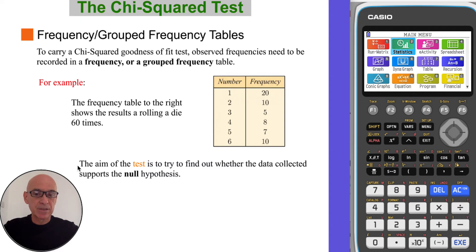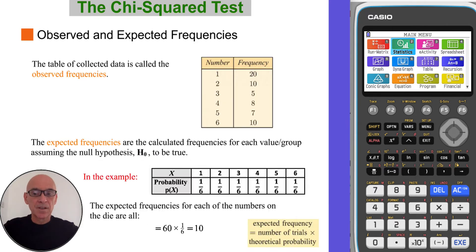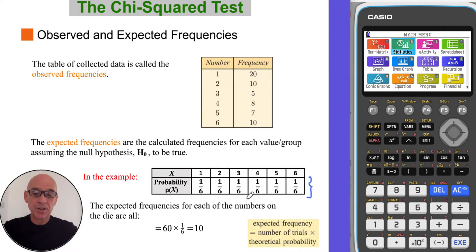To carry out a chi-squared goodness of fit test, observed frequencies need to be recorded in a frequency table or grouped frequency table. For example, we might roll our die 60 times and record the number of occurrences for each number in a frequency table as shown here. The expected frequencies are calculated for each value on the die assuming the null hypothesis to be true. In our example we would expect a probability of 1/6 for each number, so we multiply 60 by 1/6 and expect each number to occur 10 times.